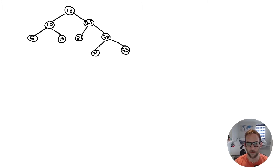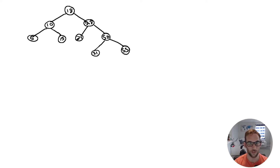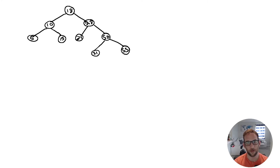Deletion is the same as a binary search tree — check if the node has zero, one, or two children and perform the regular BST deletion. The difference with AVL trees is the post-processing: after deletion, we start at the deleted node and go up the tree all the way to the root, rebalancing anything that's unbalanced.